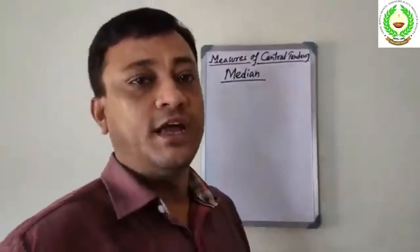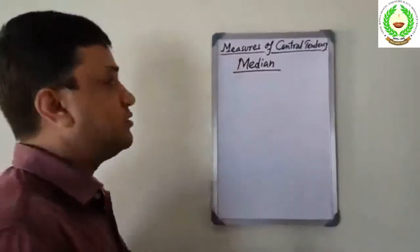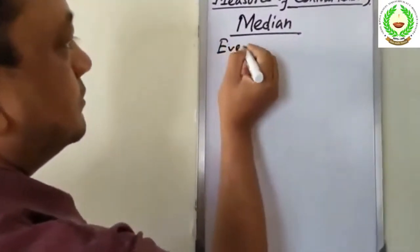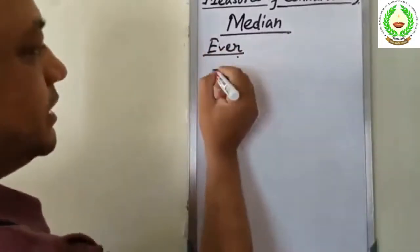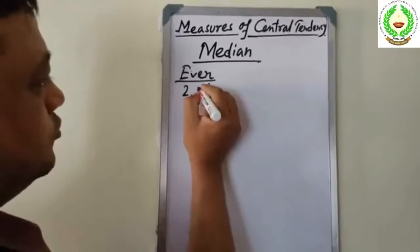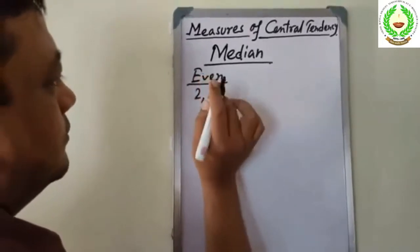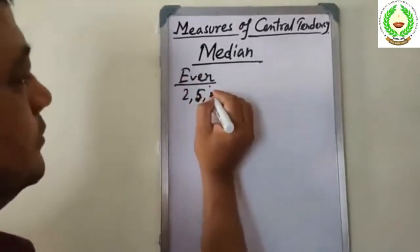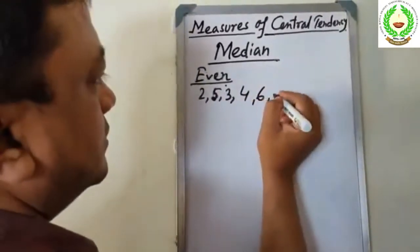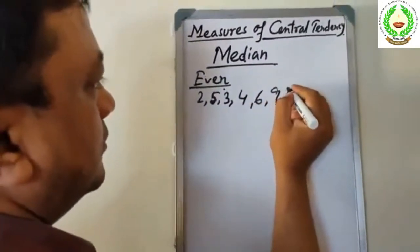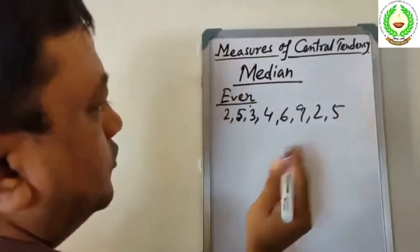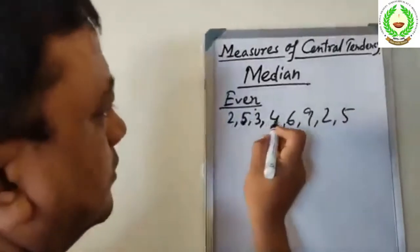For ungrouped data, let's take an example. The values are: 2, 5, 3, 4, 6, 9, 2, 5.